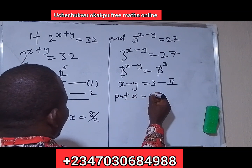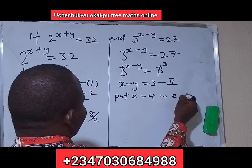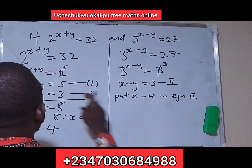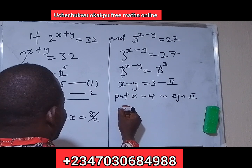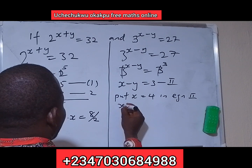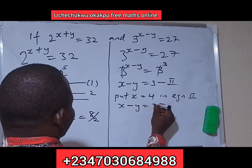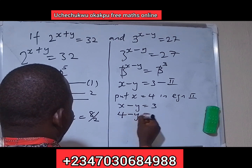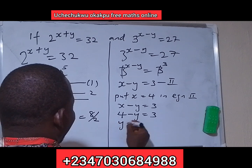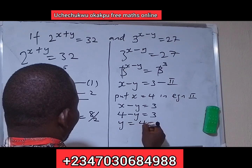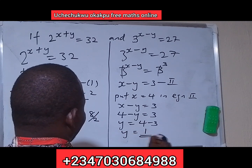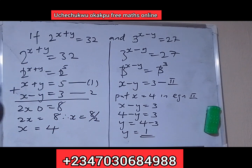Now put x equals 4 into equation 2, which is x minus y equals 3. So 4 minus y equals 3, which means y is equal to 4 minus 3, and y is equal to 1.